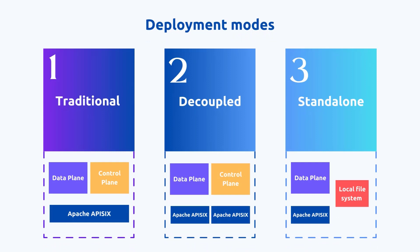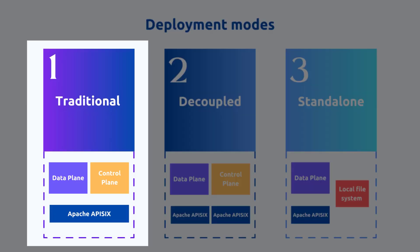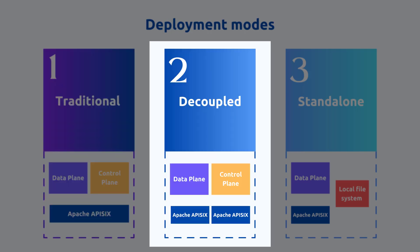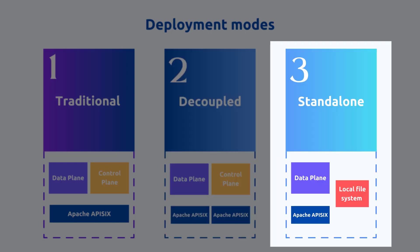APISIX has three different deployment modes for different production use cases. The first is traditional mode, where the data plane and control plane are deployed together sharing a single APISIX instance. In decoupled mode, the data plane and control plane are deployed independently, with one instance of APISIX for each deployment. In standalone mode, only the data plane is deployed with a single instance of APISIX, and the configurations are loaded from local files such as YAML.